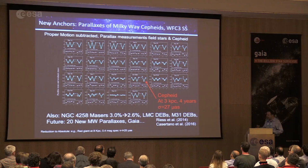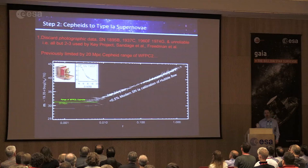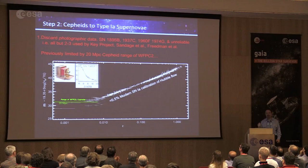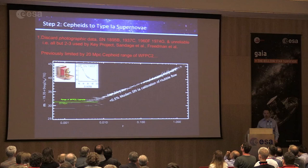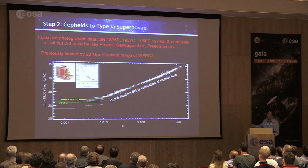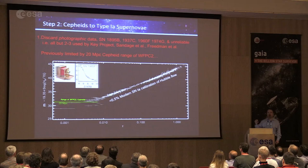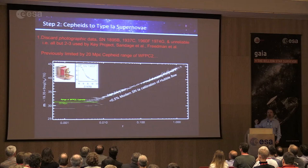The second step in our distance ladder connects Cepheids to supernovae. This was one of the main reasons the Hubble Space Telescope was built — to see individual stars in distant galaxies and calibrate their distances to measure the Hubble constant. When HST was built, the Hubble constant was uncertain by a factor of two. The first really capable camera after the corrective optics, WFPC2, could only see Cepheids out to about 20 megaparsecs.